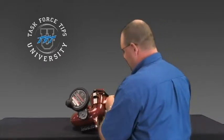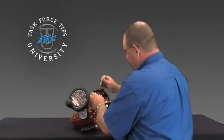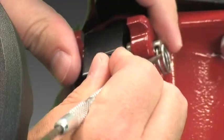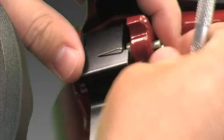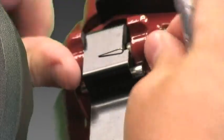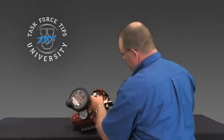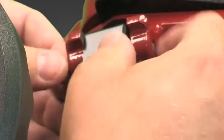First step is to grab either a flathead screwdriver or what I have is a pick. Take the spiral pin off. After the spiral pin is off, go ahead and pull the pin out.